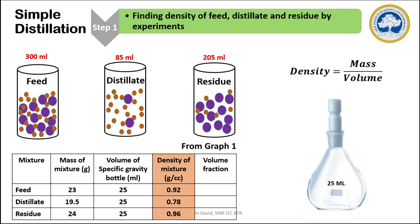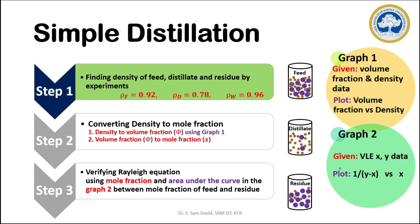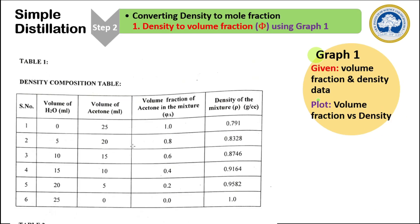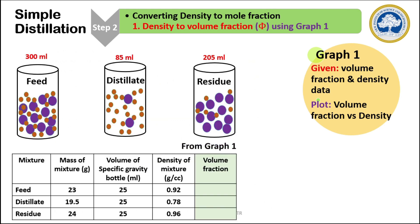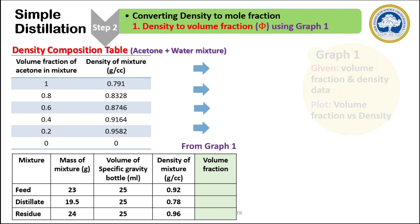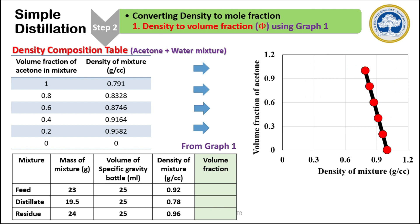The second step is to find the volume fraction using Graph 1. The density has to be converted to mole fraction, which will be done in two stages. First, density is converted to volume fraction using Graph 1, which is the graph plotted between volume fraction and density of the acetone-water mixture. To find the volume fraction, we draw a perpendicular line from the density value on the x-axis. From the point at which it meets the curve, we draw another horizontal line towards the y-axis — the point at which it meets will be the volume fraction. We repeat the same procedure for finding the volume fraction of distillate and residue.